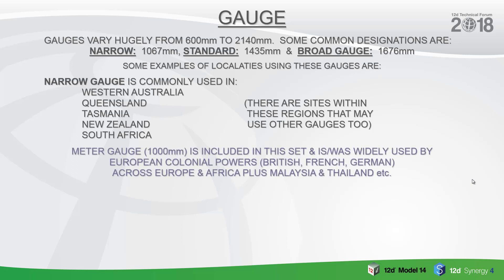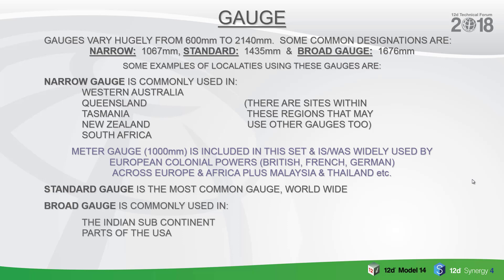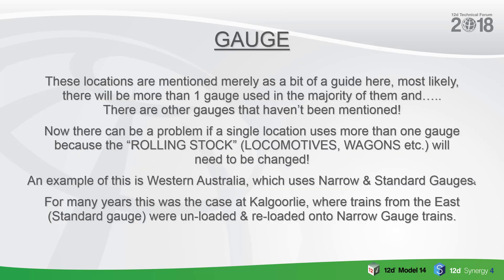Metre gauge, which is obviously 1000 mm, is included in this set and was widely used by European colonial powers — British, French, German generally — across Europe and Africa, plus Malaysia, Thailand, etc. Standard gauge, around about 1435 mm, is the most common gauge worldwide. Broad gauge is commonly used in the Indian subcontinent and parts of the USA. These locations are mentioned merely as a guide — most likely there will be more than one gauge used in the majority of them, and there are other gauges that haven't even been mentioned.